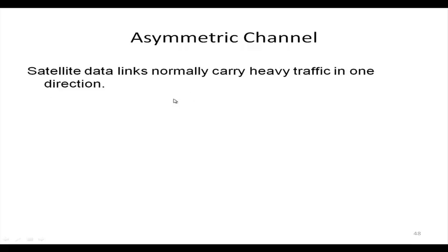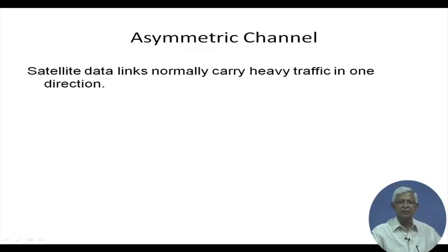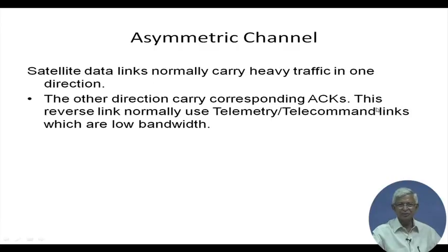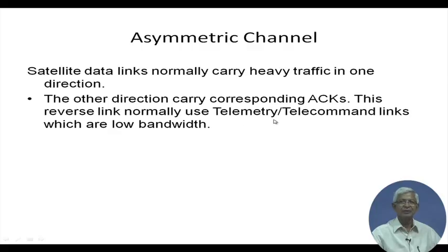Satellite data links normally carry heavy traffic in one direction — this leads to the asymmetric channel issue. Large volumes of data such as radar data or moon surface data are sent in one direction, while the reverse direction carries only ACKs. The reverse link is normally part of the telemetry/telecommand link, which is a very low bandwidth link.